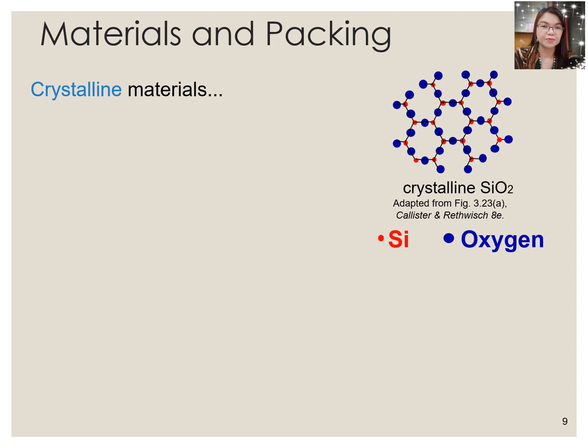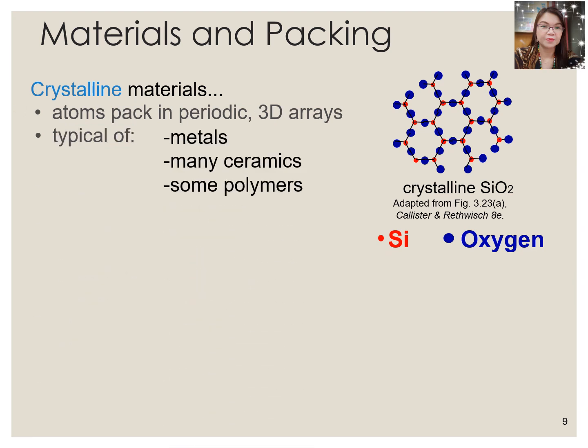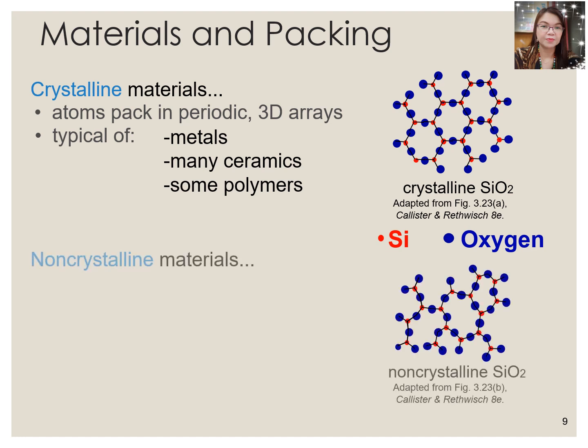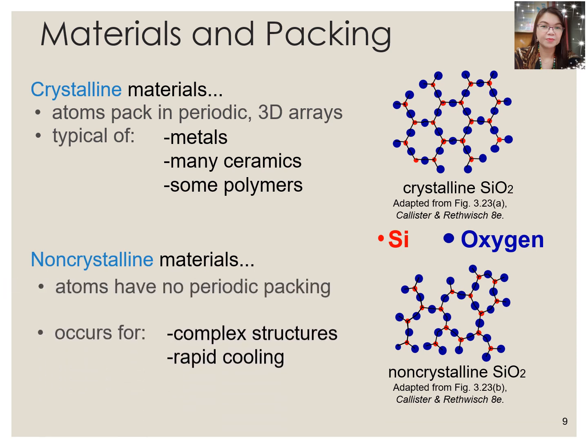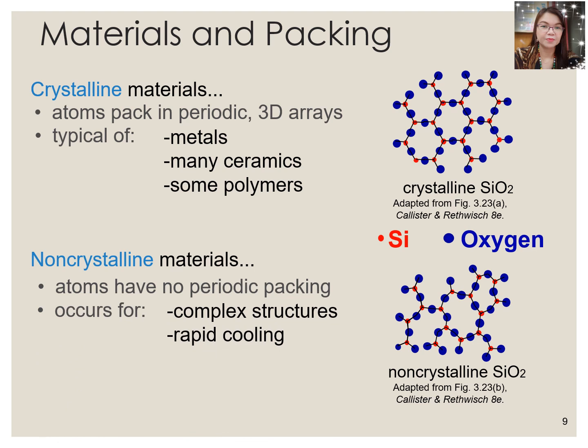What you can see from this slide is an example of crystalline materials composed of silicon and oxygen, forming silicon dioxide. These shapes are hexagonal by nature. Atoms are packed in periodic 3D arrays, and these are typical for metals, ceramics, and polymers. Whereas, if this material comes as non-crystalline, you cannot see any two shapes that are the same for the non-crystalline silicon dioxide because atoms have no periodic packing. This occurs mainly because of the complex structure and due to rapid cooling, for example, of ceramics. That's why sometimes we term amorphous as non-crystalline.